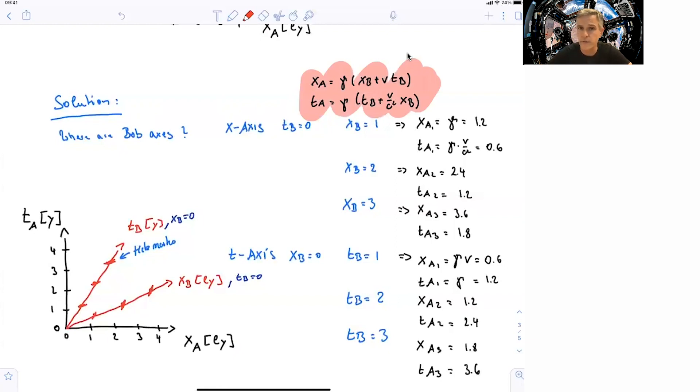So the first point we want to find is tb equal 0, and xb equal 1. So with the Lorentz transformation, we find that xa equals 1, so this point corresponds in Alice's space-time diagram, to xa equal gamma equal 1.2, and ta equal gamma times v over c squared equal 0.6. So we can make this, find this first point, and plot it in our diagram right here.